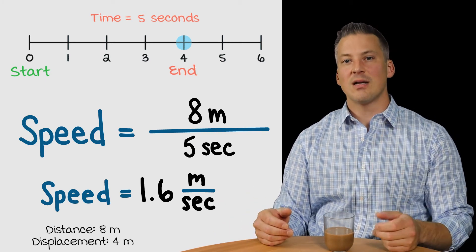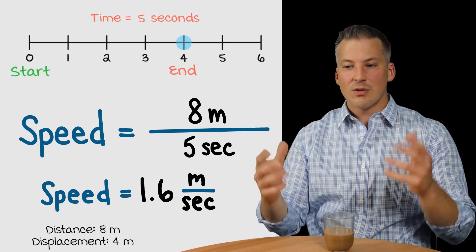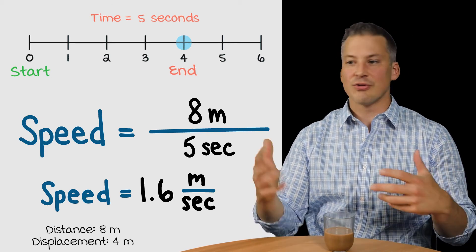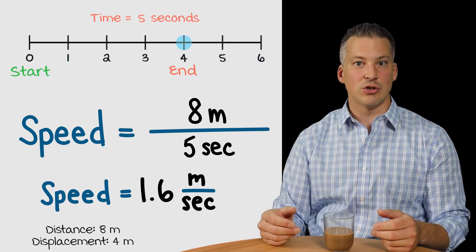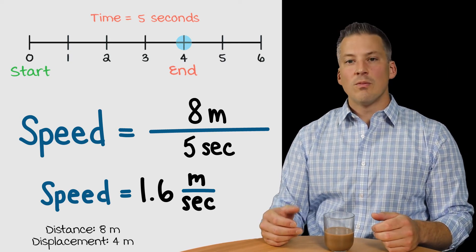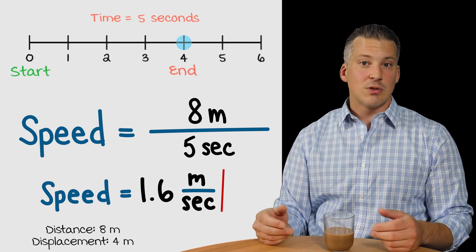Now, meters per second is basically the standard unit here for physics. So, basically, everything we're going to be doing, we're probably going to be dealing with meters per second. So, if they give you miles or hours or something, we're probably going to have to do some conversions. We've done a whole bunch of stuff like that in the past. So, we now know that the speed of this object is about 1.6 meters per second.